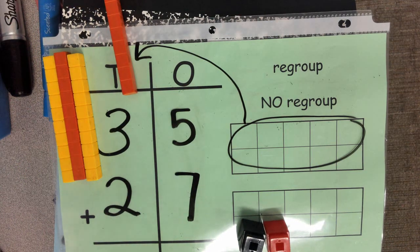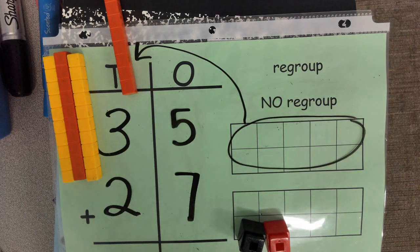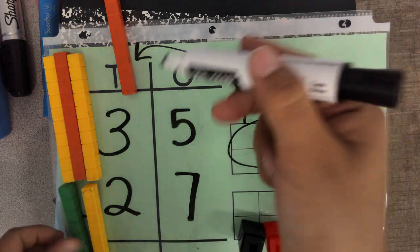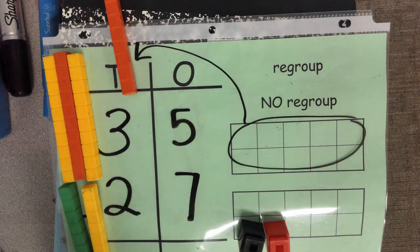I want you to notice you didn't get rid of the ones that were here. You simply moved them over to the tens place. You regrouped them.